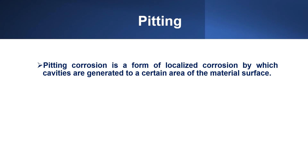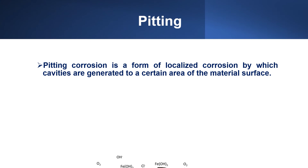Pitting corrosion refers to a form of localized corrosion by which cavities are generated on a certain area of the material surface. Pitting corrosion is known as one of the most damaging forms of corrosion.